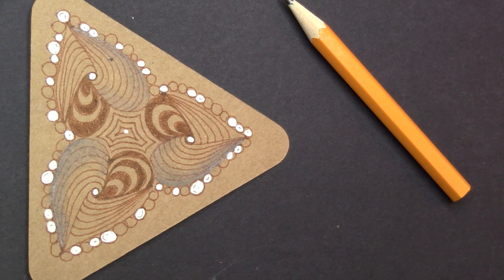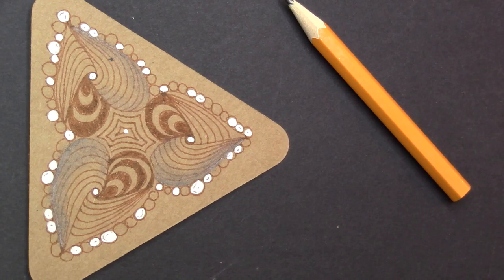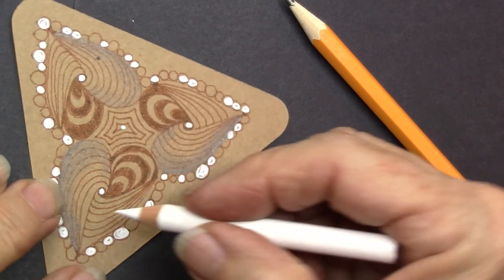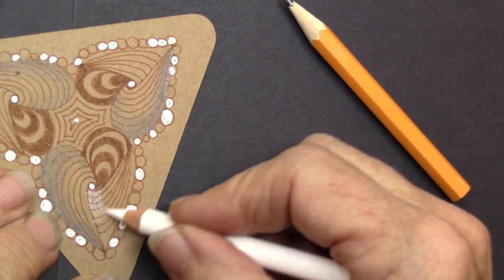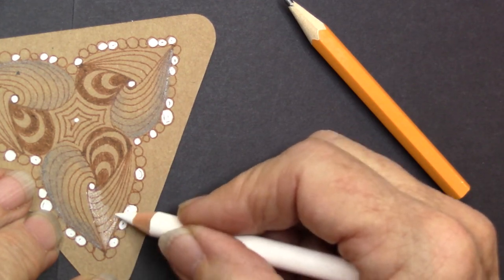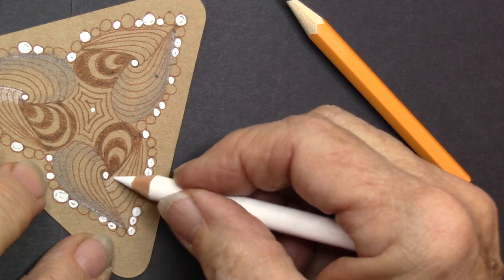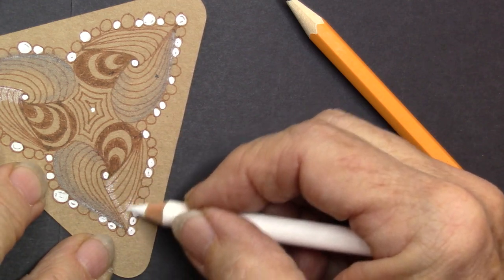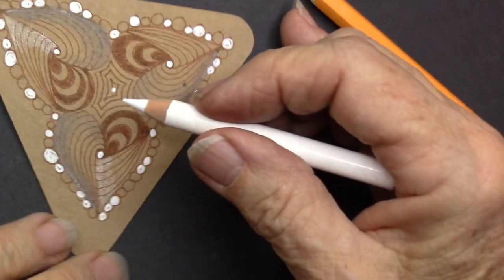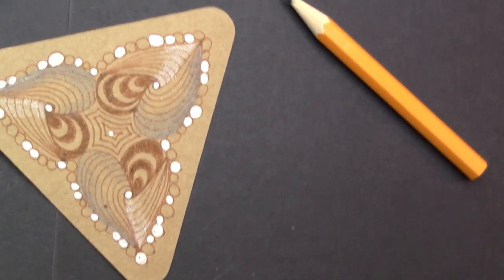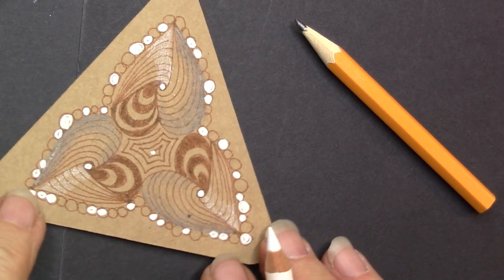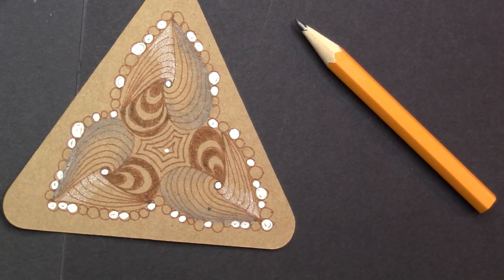So, and then you can also take your white pencil and add a little white. And I'm just going to add a little white in here. You don't always have to shade with graphite. You can shade with a little white. And there we have